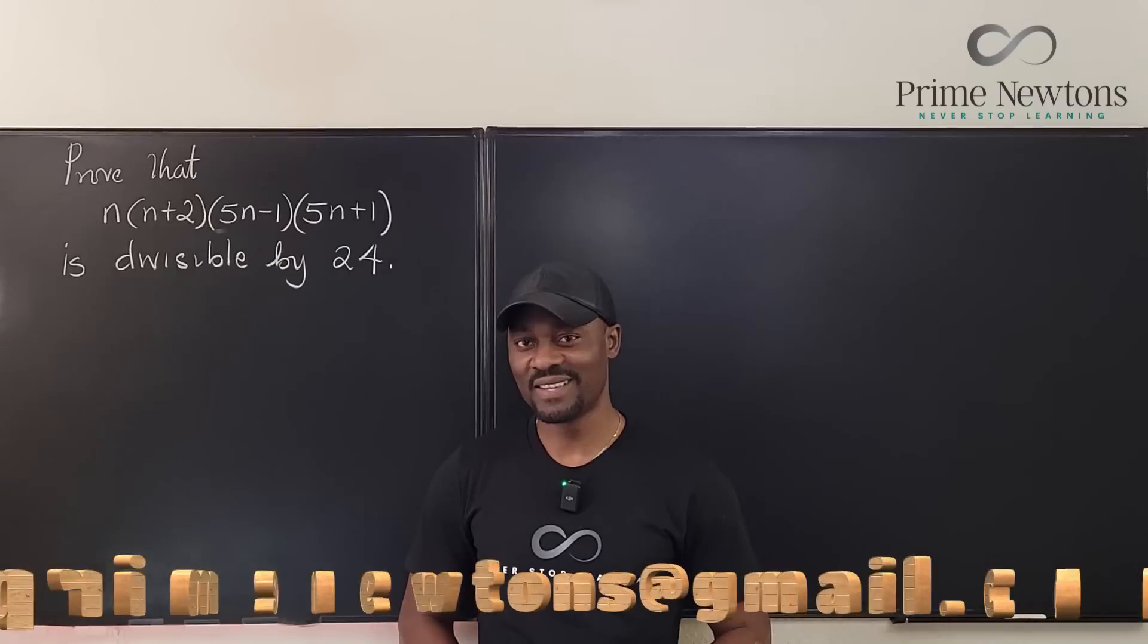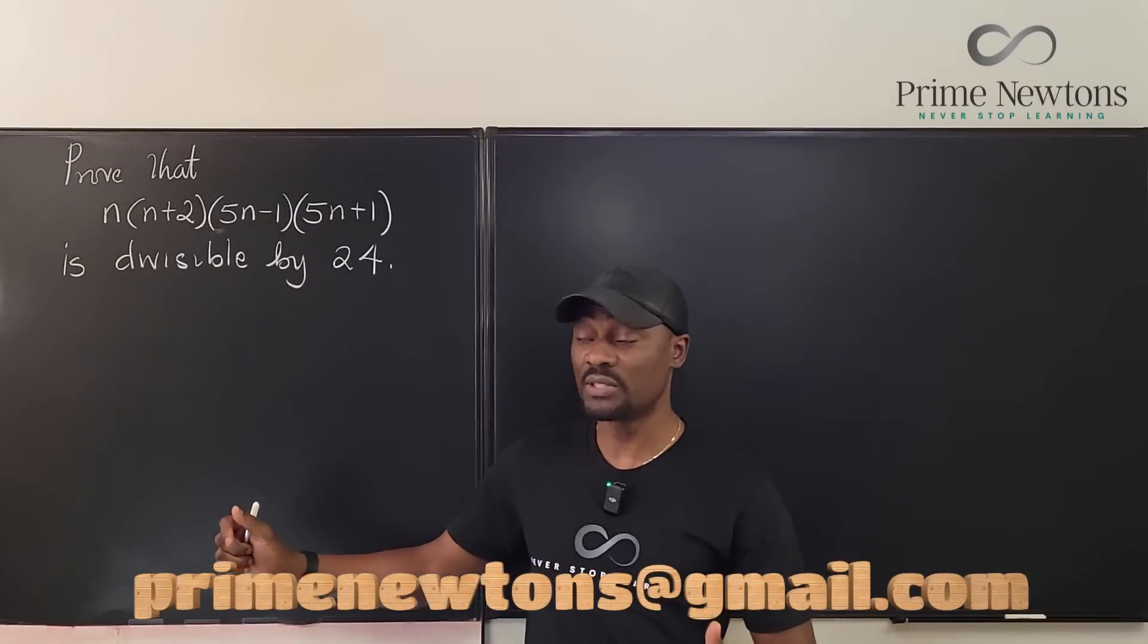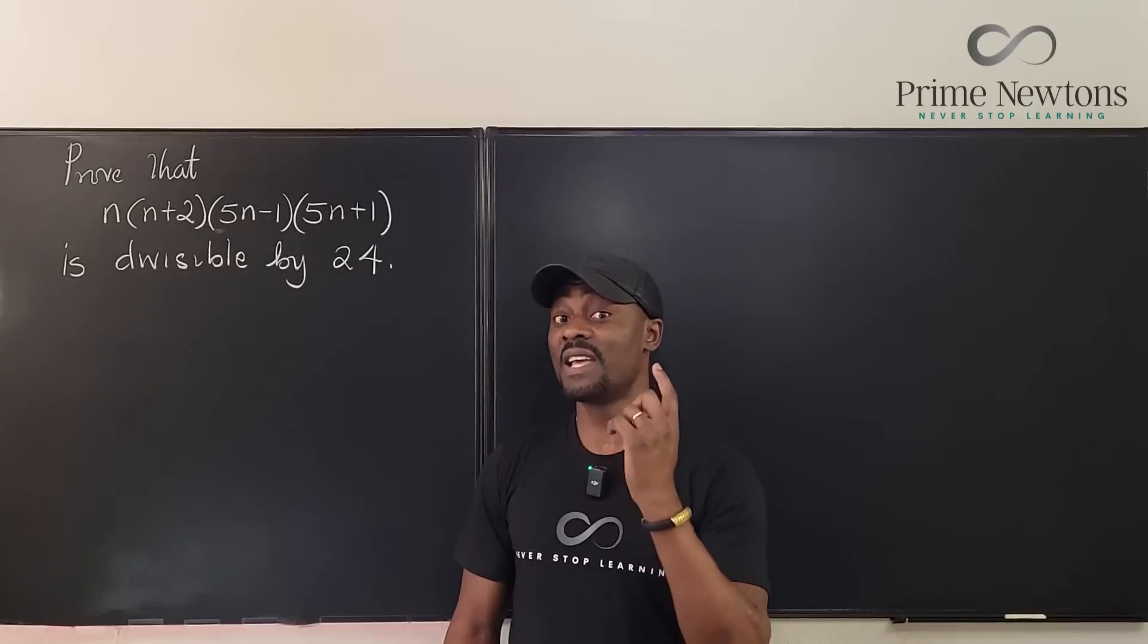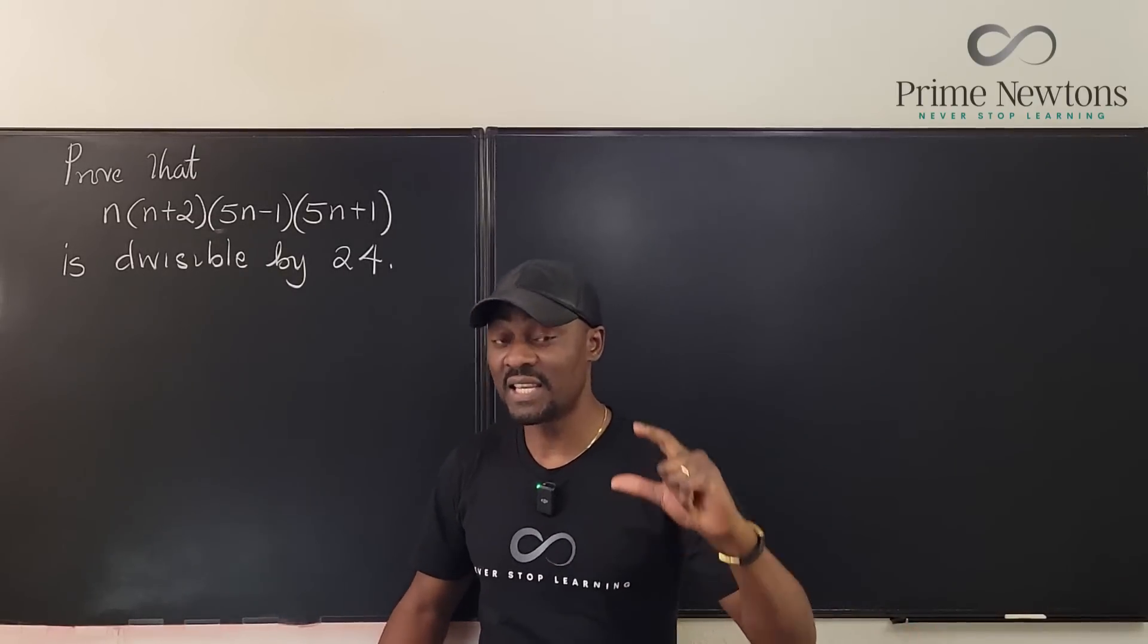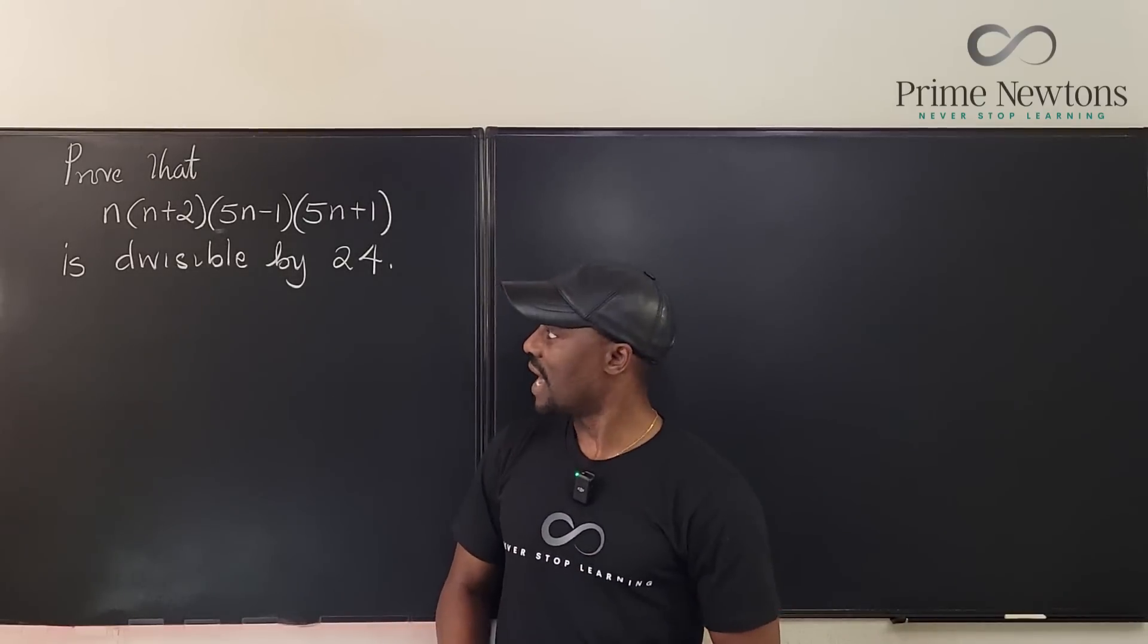Welcome to another video. In this video we'll be proving that n times n plus 2 times 5n minus 1 times 5n plus 1 is always divisible by 24 as long as n is a natural number, that is a positive integer.